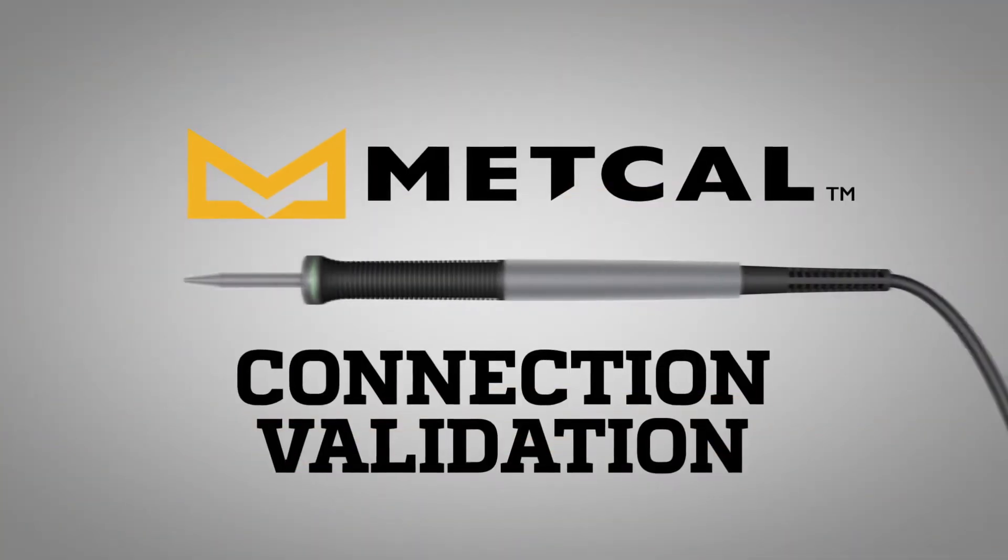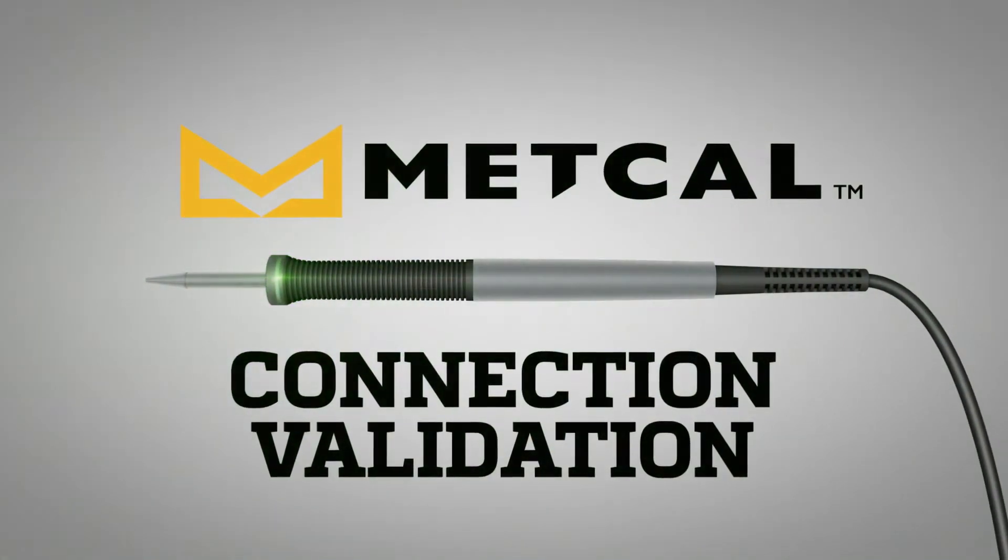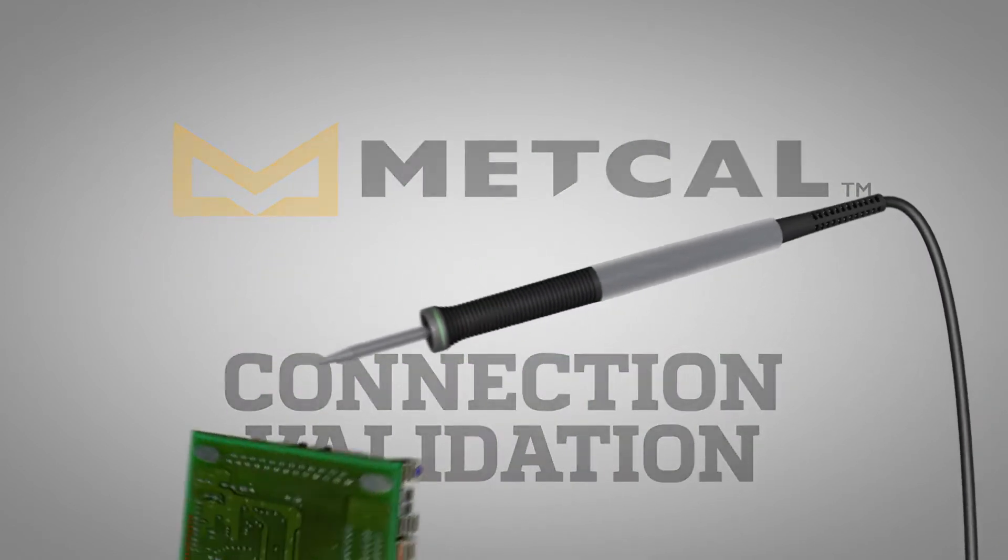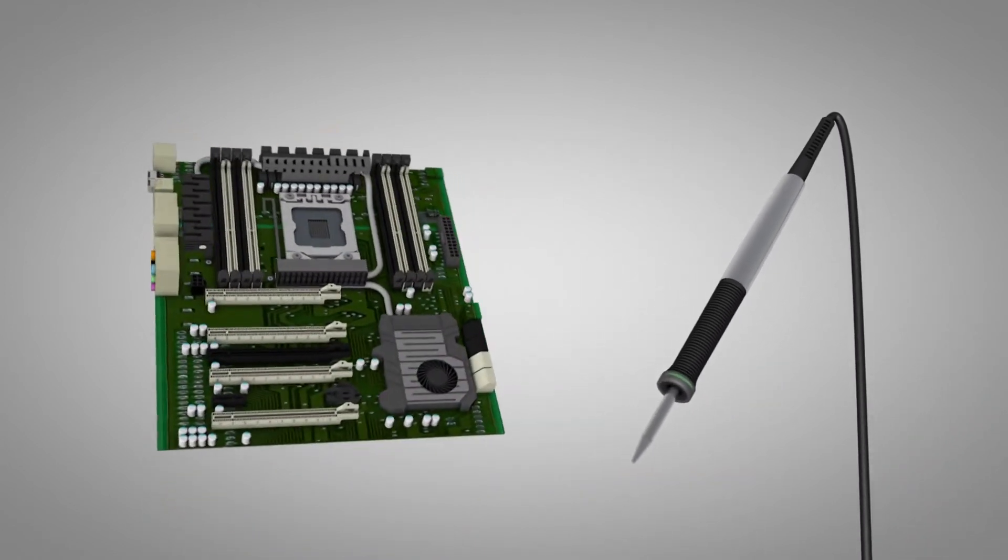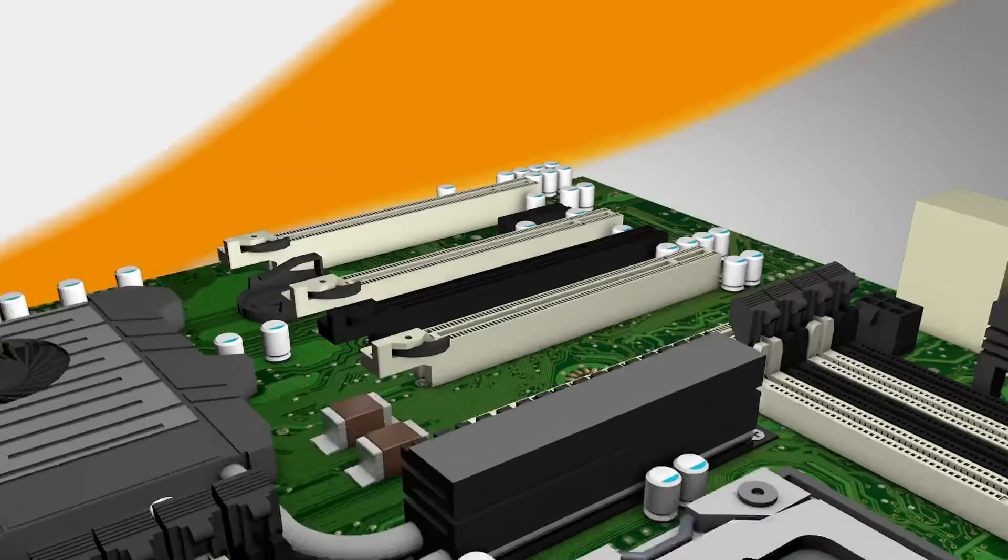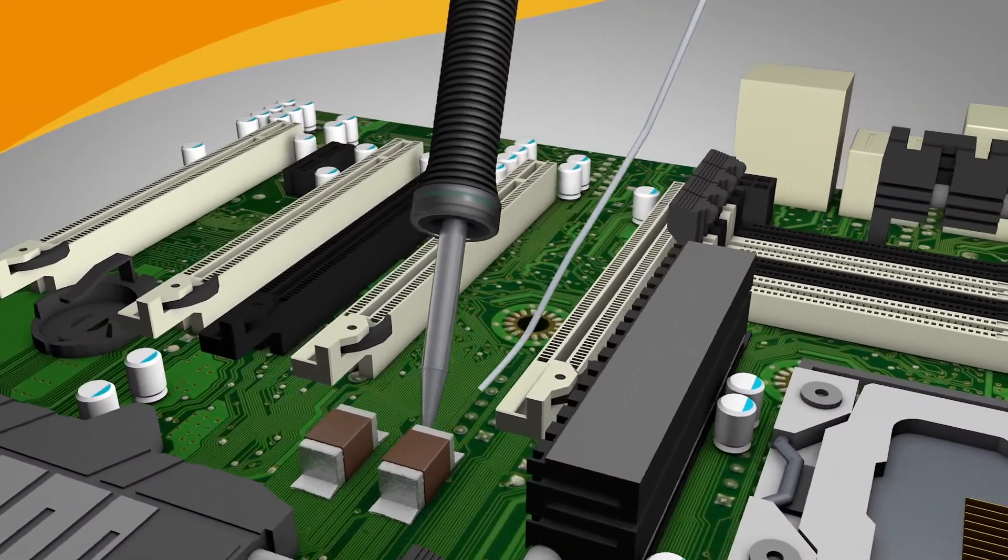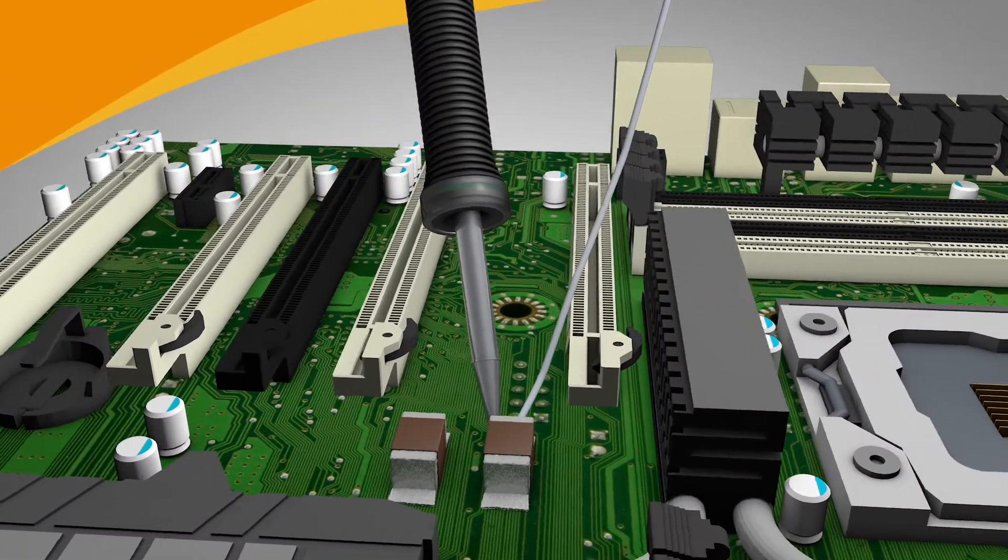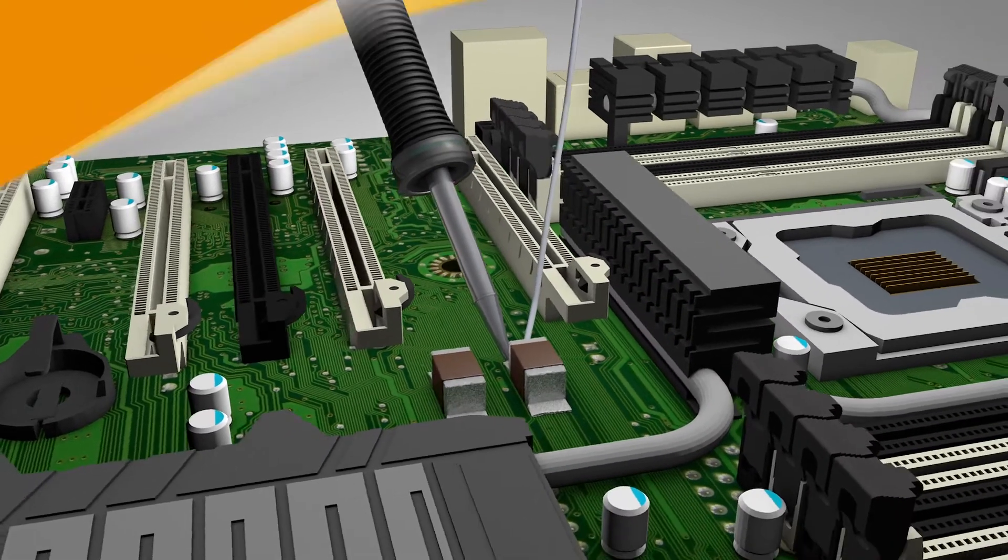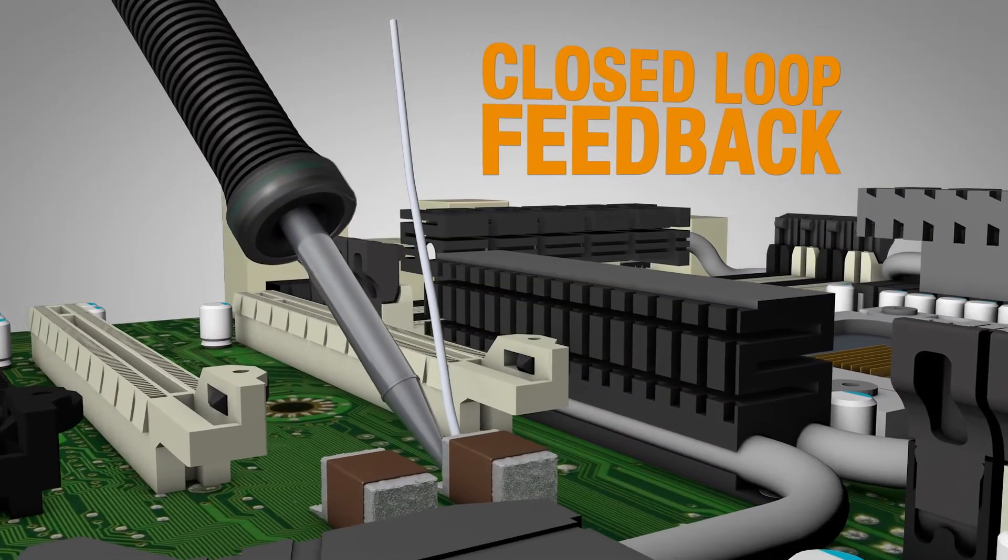Introducing Connection Validation. The intermetallic compound thickness is critical in the formation of a solder joint. Connection Validation evaluates the quality of the solder joint by calculating the intermetallic compound formation and providing closed-loop feedback to the operator.